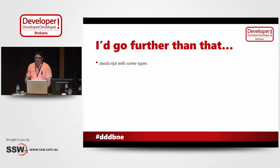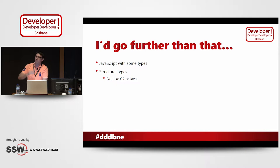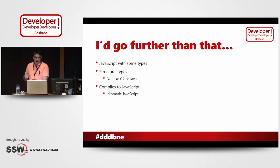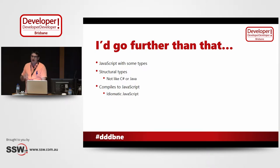It is JavaScript with some types, but they're structural types. It's not like C# or Java where you've got to define everything up front and it's very rigid. Everything doesn't have to implement what you're passing through. We'll look at why that is shortly. And it compiles down to JavaScript — the idiomatic JavaScript. If you were trying to structure your code cleanly for a large application, it's the sort of JavaScript you would be writing anyway.